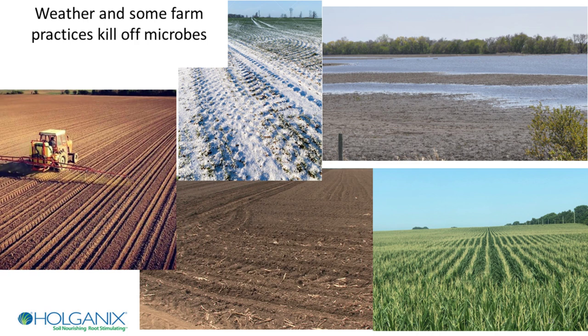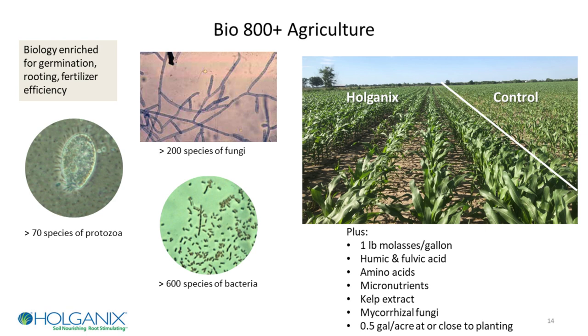It also depends what you grew in the field the year before and what you're growing now. Six to ten percent of the microbes farmed by the plant differ not only between corn, soy, wheat, and oak trees, but between corn hybrids and between soybean varieties. The soil is built to be diverse, and frankly there's a lot we still need to learn.